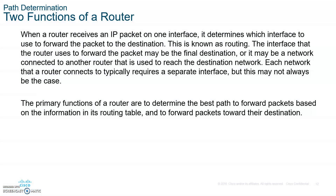Routing is when a router receives a packet on one interface and determines which interface to use to forward the packet to the destination. Routers use routing tables to find the best path — best meaning quickest — to the destination.